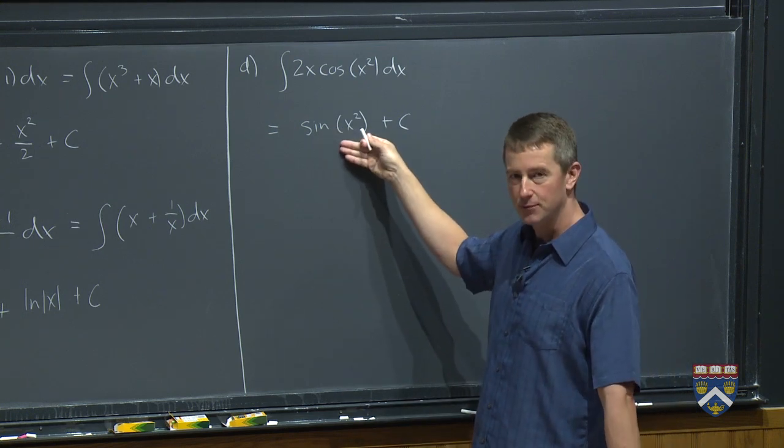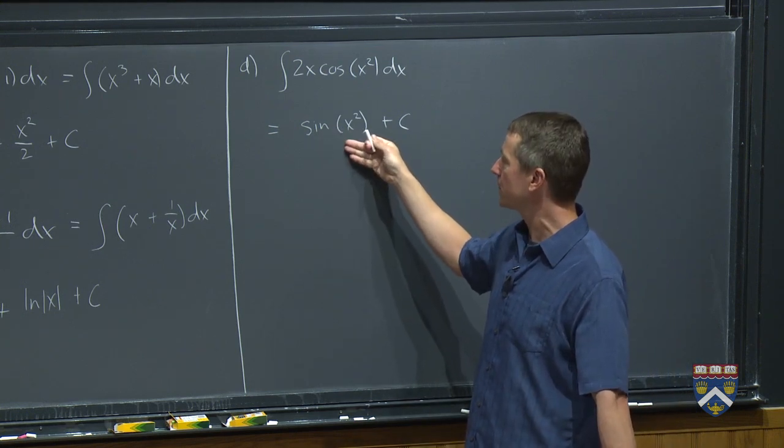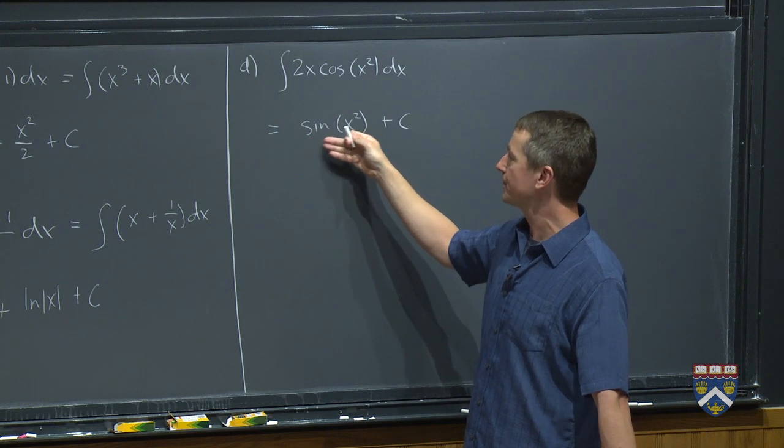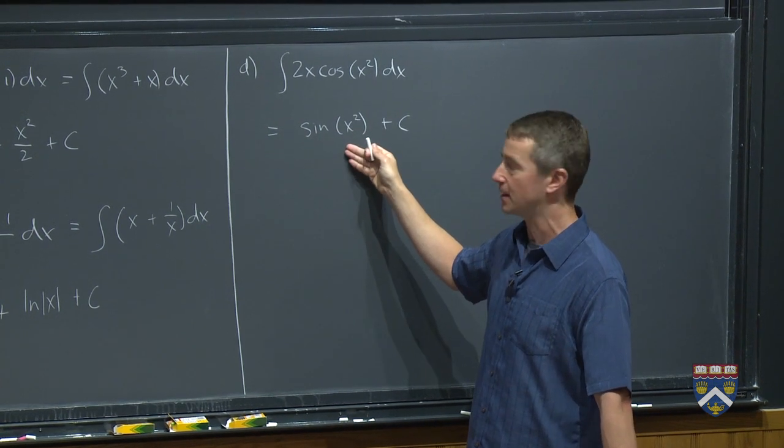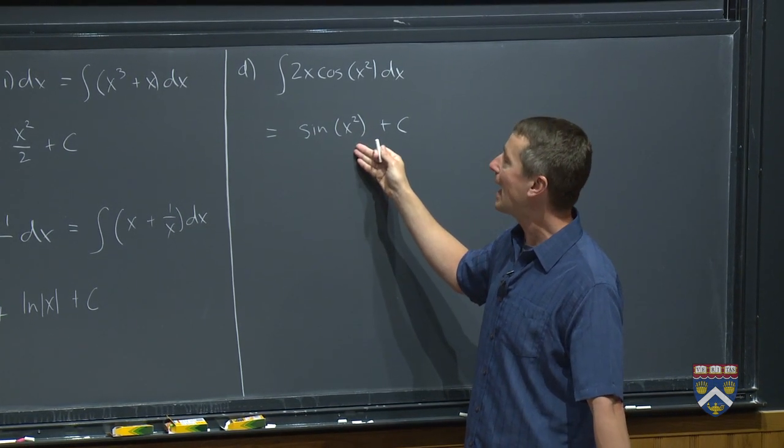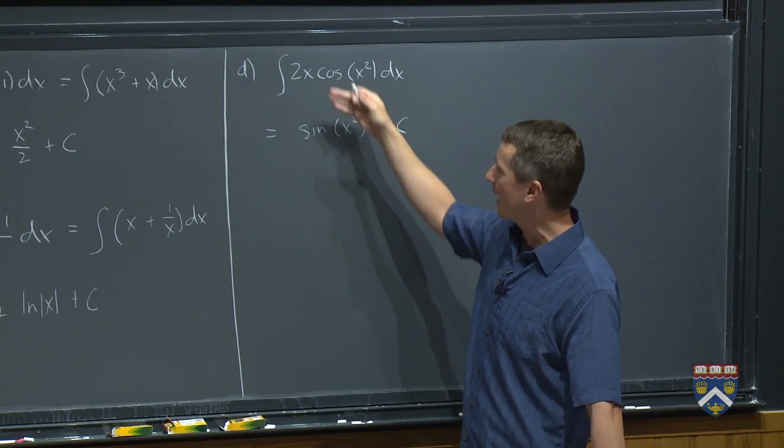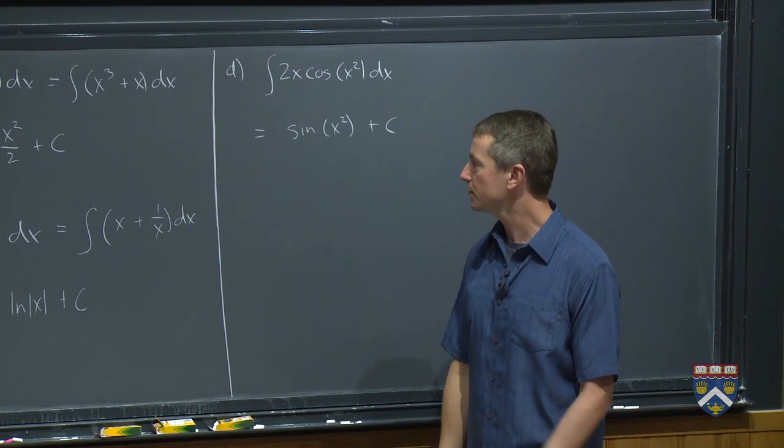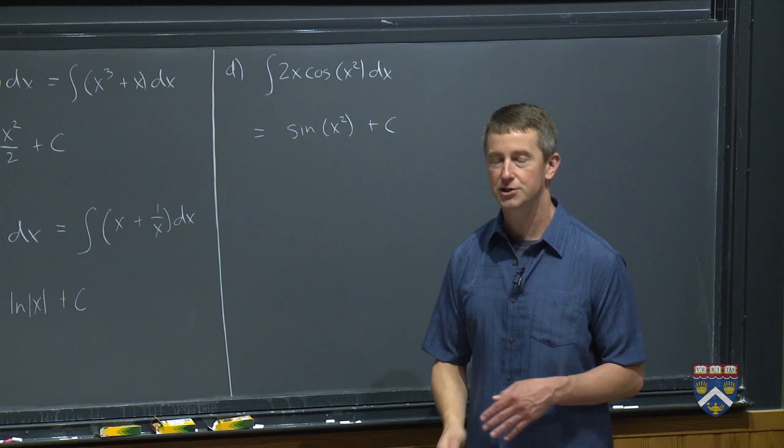Let's check. If we use the chain rule to take the derivative sine of x squared, what do we get? The sine of something becomes cosine of something, the same something, right? Cosine of x squared, and then we take the derivative of that and we get the 2x. So this is correct by the chain rule.